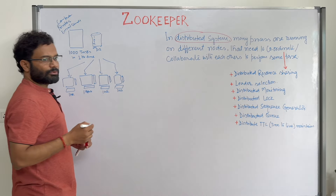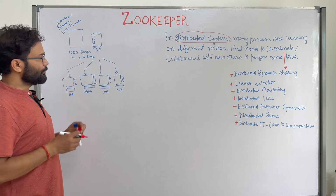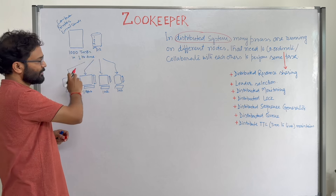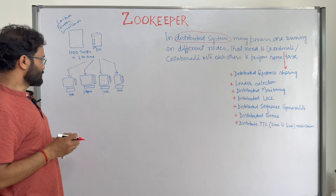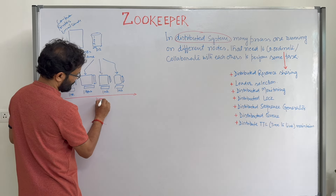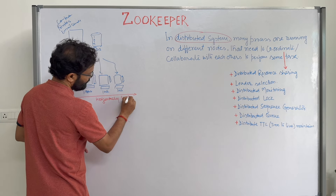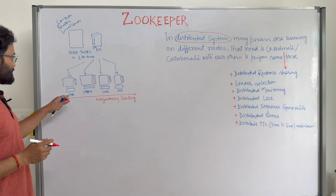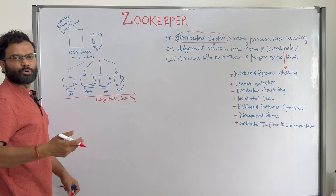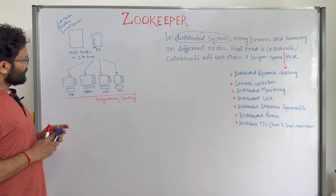This is called a distributed system — when you engage more than one node to perform a bigger task, distributing the work across multiple nodes. This is also called horizontal scaling. Tomorrow if you want to finish in half an hour, you add four more nodes, and your job is done.